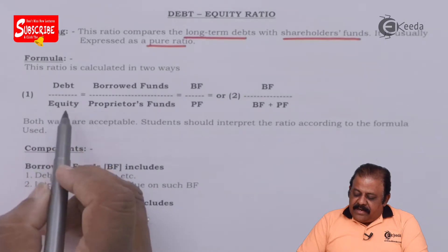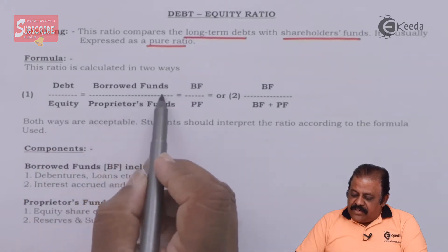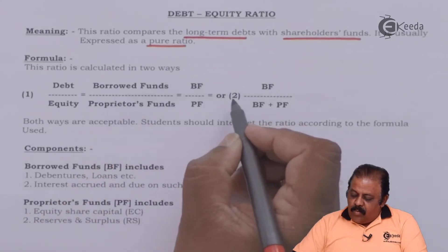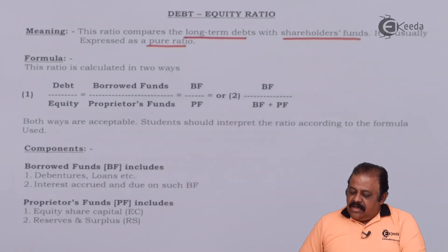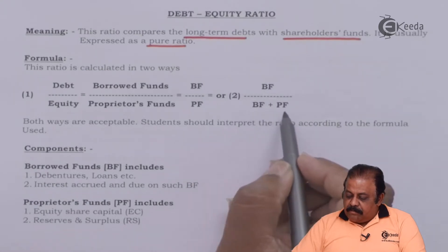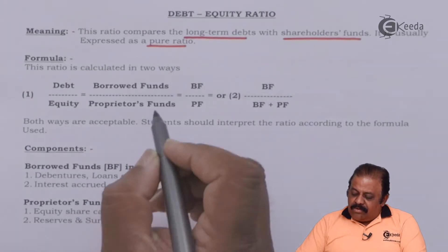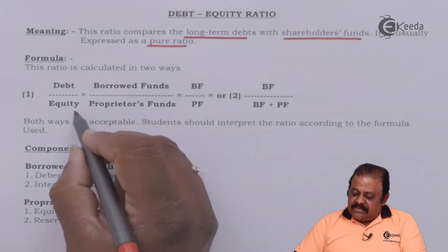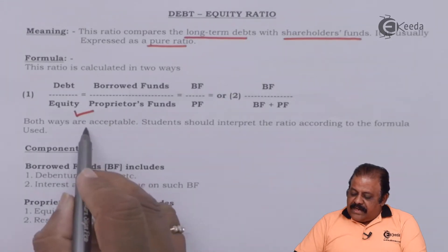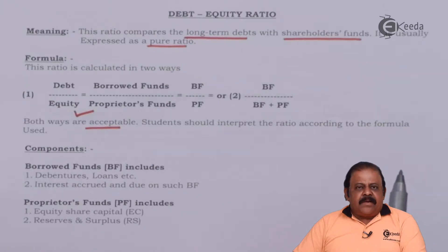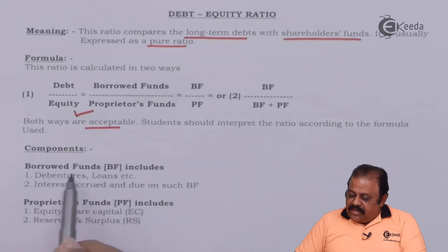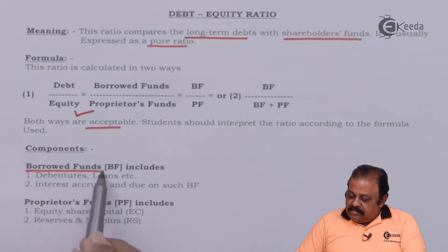The formula: this ratio is calculated in two ways. First, debt divided by equity — that is borrowed funds divided by proprietors' fund. Another way is borrowed fund divided by borrowed fund plus proprietors' fund. However, the more accepted formula is borrowed fund divided by proprietors' fund. Both ways are acceptable and we can interpret our answer accordingly.